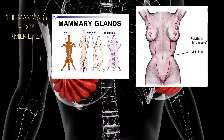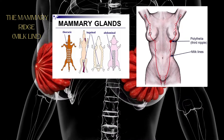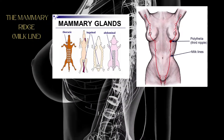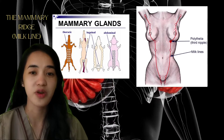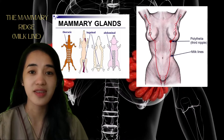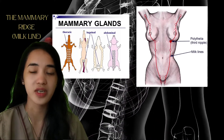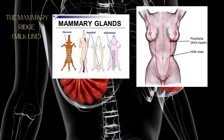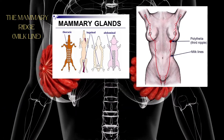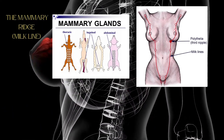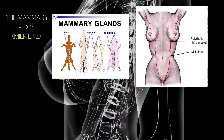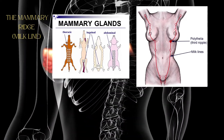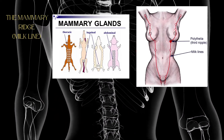The mammary ridges extend from the axillary region or armpit of the conceptus to the inguinal region. The number of mammary glands that develop from the mammary ridges depends on the species. In dogs and cats, they have a series of individual glands that develop at predictable positions along the entire path of the mammary ridges.